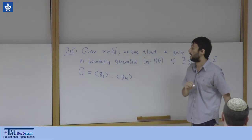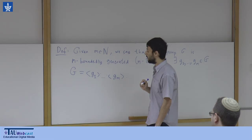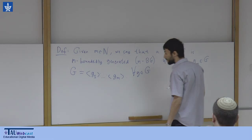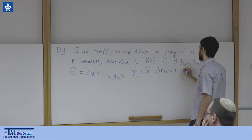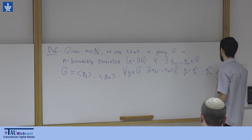We abbreviate it as m-bounded regenerated if there exist elements g1 to gm from the group G, such that we can write the group G as a product — as a set — of the cyclic subgroups generated by these m elements. What this means is that for every element g in the group, there exist some integers n1 to nm such that g equals g1 to the n1 times gm to the nm.